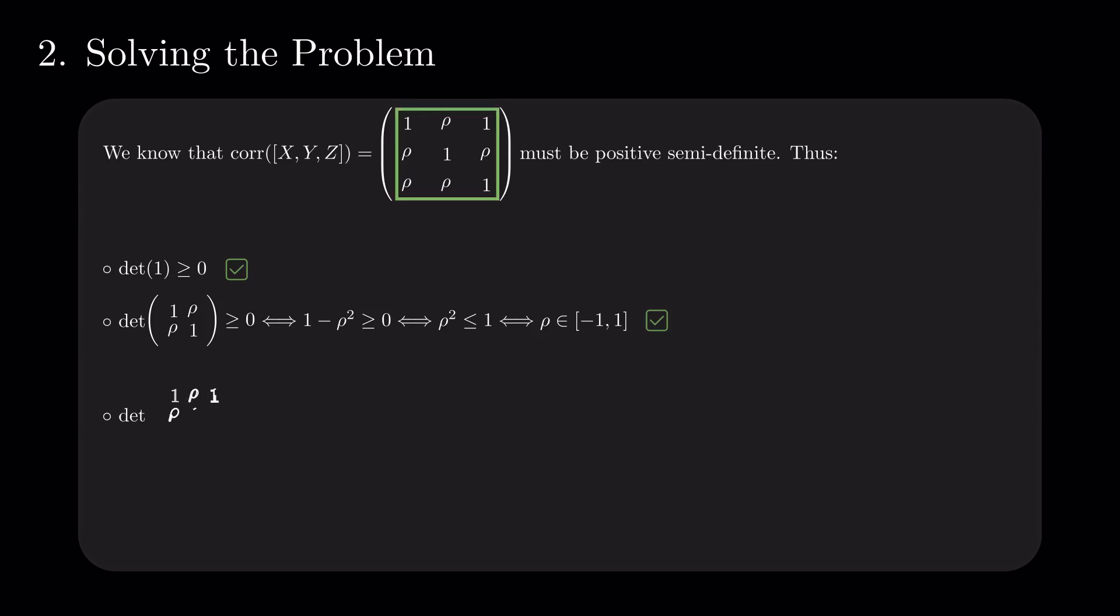The third, and last one, is the determinant of the matrix itself. We use Sarus's rule to compute a determinant. We expand the polynomial and get that 1 minus rho squared times 1 plus 2 rho is greater than or equal to 0. This implies that either rho is 1, or 1 plus 2 rho is greater than or equal to 0. So, rho is greater than or equal to minus 1 divided by 2.